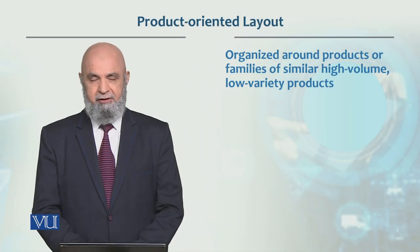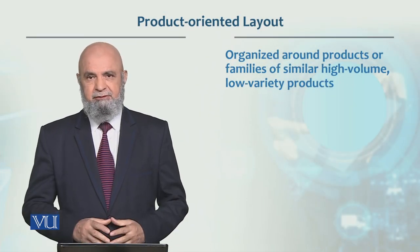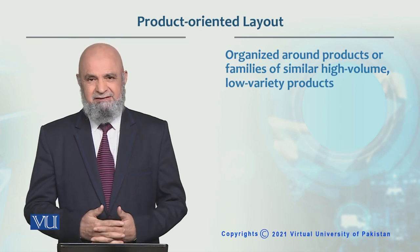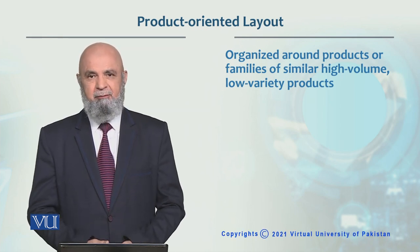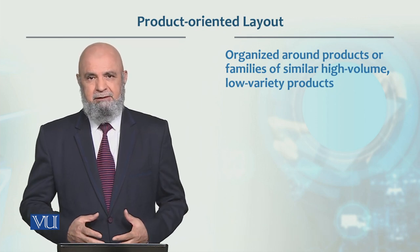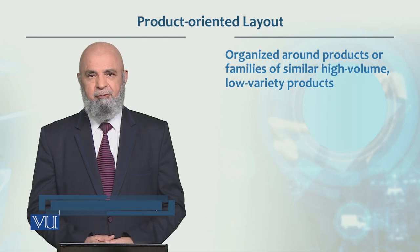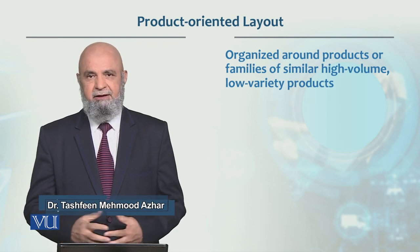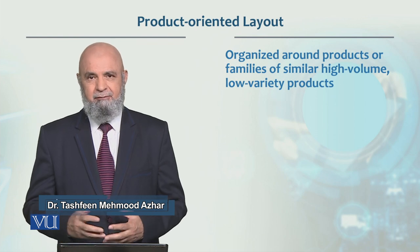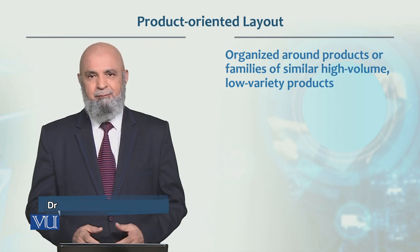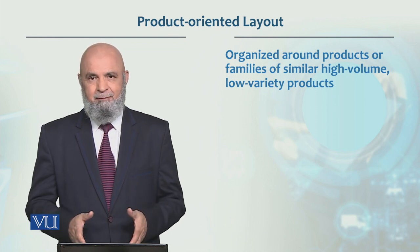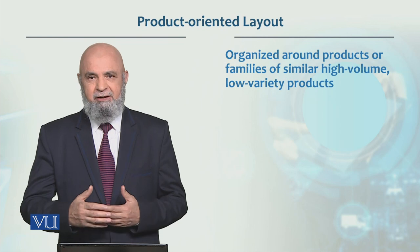A product-oriented layout is usually organized around a single product or a family of that product. For example, consider a family of a product — let's consider a lead-acid battery, which is used in a car. This product is a car battery. How will this family of products look?